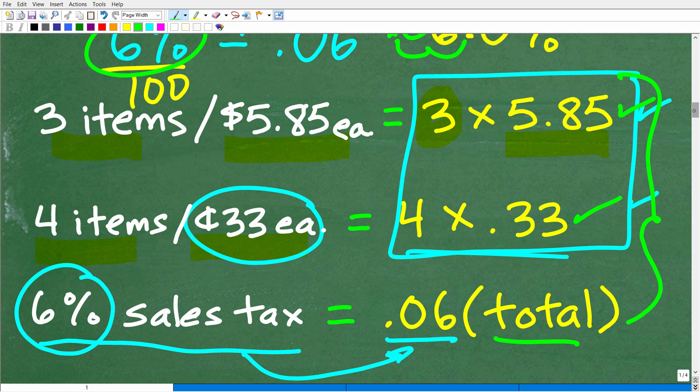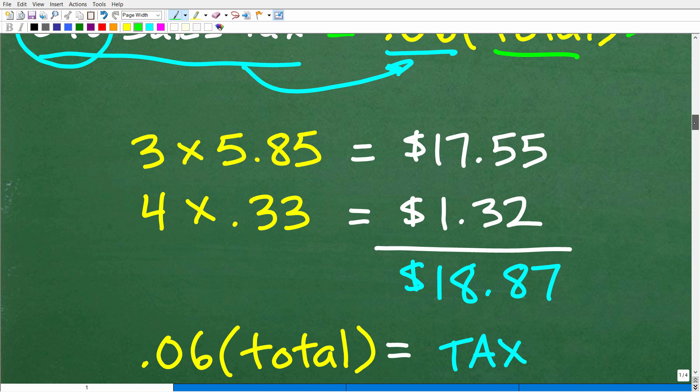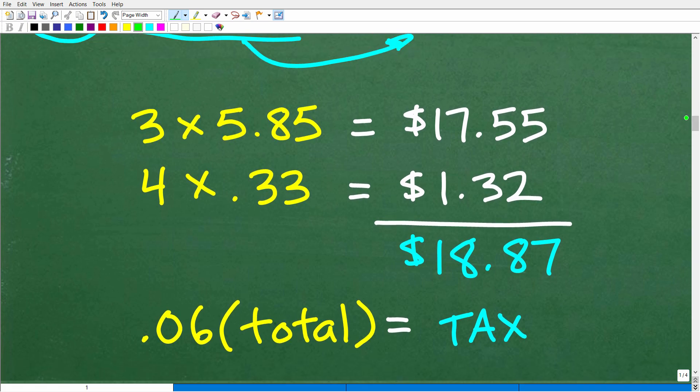And then we're going to have to calculate everything together. And then we'll see if we have enough money to handle this transaction. So let's go ahead and take the next step here, which, of course, is to just do these quick calculations. So 3 times 5.85, you know, of course, please use your calculator. No need to do this by hand. So 3 times 5.85 is $17.55. And 4 times 33 cents is 4 times 0.33, which is $1.32.